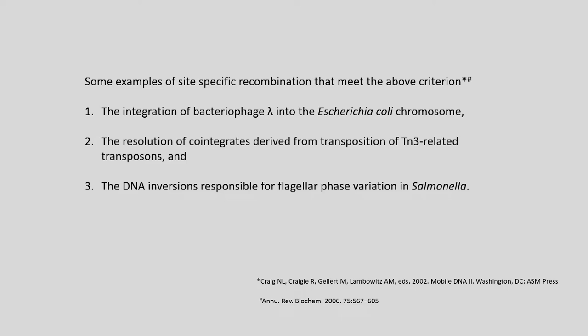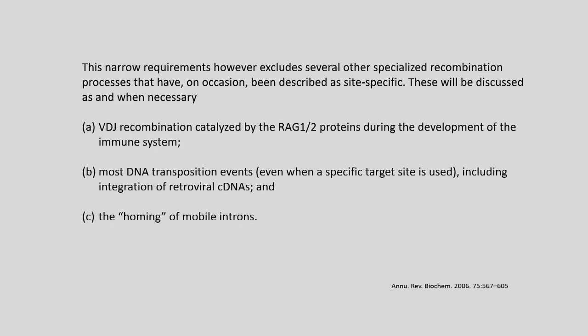Examples of site-specific recombination (SSR) include the integration of bacteriophage lambda into the E. coli chromosome, the resolution of cointegrates derived from transposition of Tn3-related transposons, and DNA inversions responsible for flagellar phase variation in Salmonella. Some specialized recombination processes occasionally described as site-specific recombination are excluded by this narrow requirement, such as VDJ recombination catalyzed by RAG1/RAG2 proteins during immune system development, most DNA transposition events including integration of retroviral cDNAs, and the homing of mobile introns.